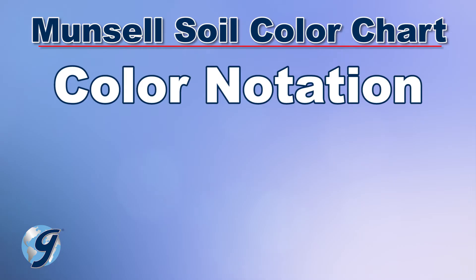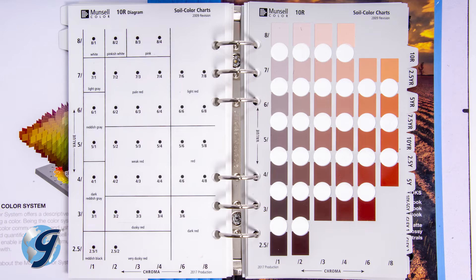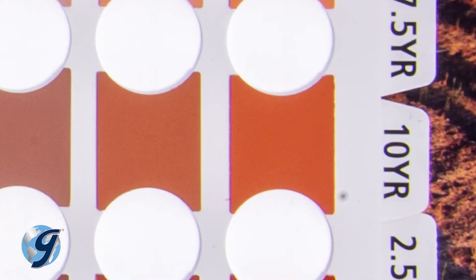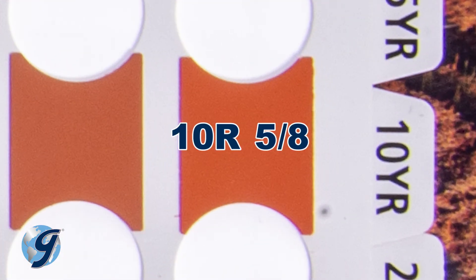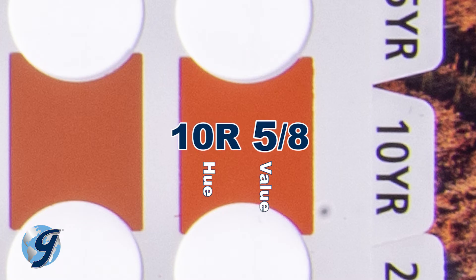Color notation should be noted in the following order: hue, value, chroma. As an example, the color notation 10R 5/8 means hue is rated 10R, 5 is the value, and 8 is the chroma.